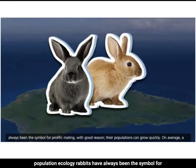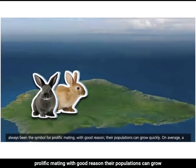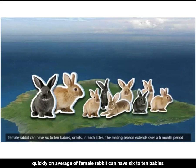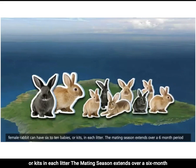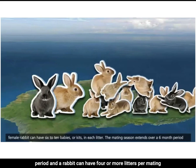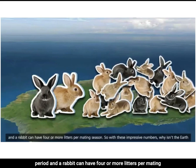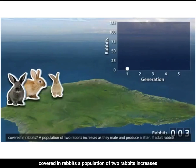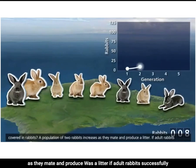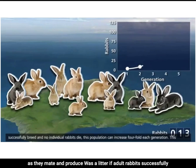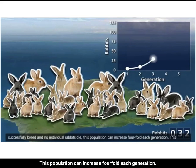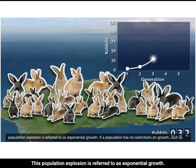Rabbits have always been the symbol for prolific mating, with good reason — their populations can grow quickly. On average, a female rabbit can have six to ten babies, or kits, in each litter. The mating season extends over a six-month period, and a rabbit can have four or more litters per mating season. So with these impressive numbers, why isn't the earth covered in rabbits? A population of two rabbits increases as they mate and produce a litter, and if no individuals die, the population can increase four-fold each generation — this is referred to as exponential growth.